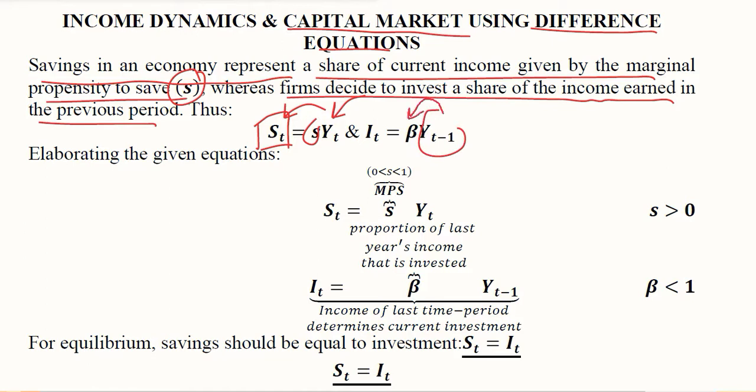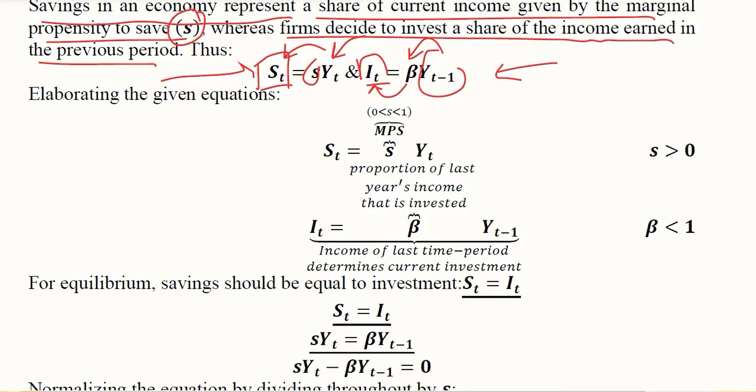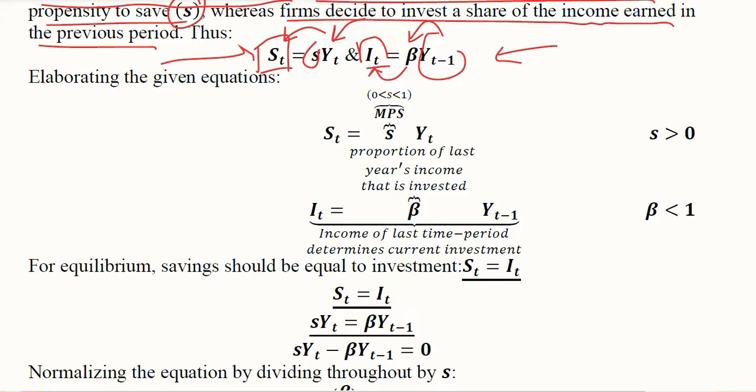A certain share of the income is invested. This is how the capital market works, and in this market we are going to achieve equilibrium. After elaborating that MPS is ranging from zero till less than minus one, and this is the national income.